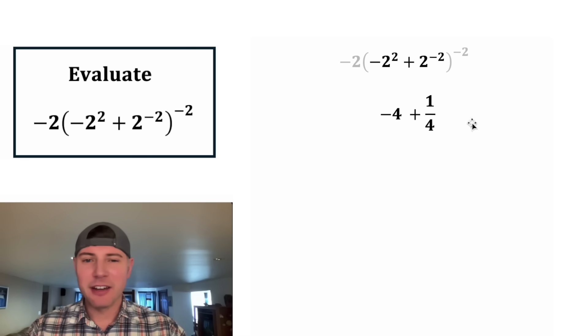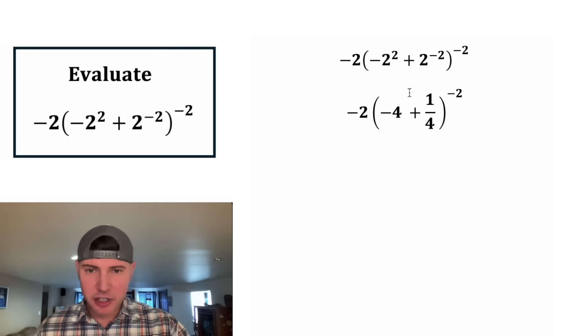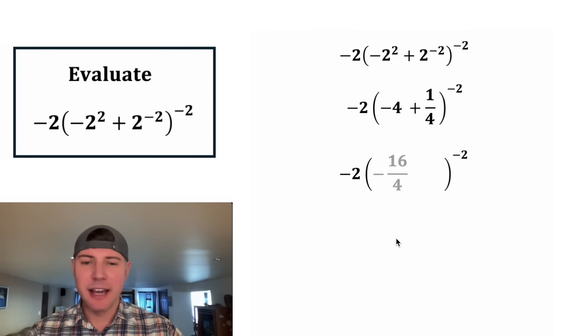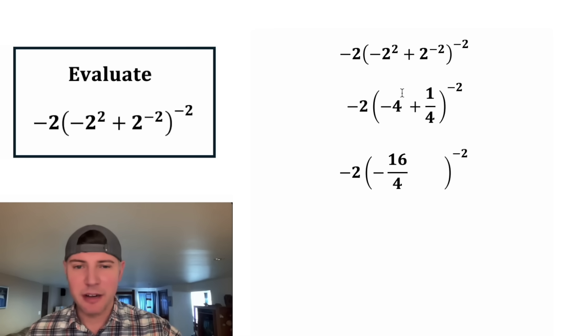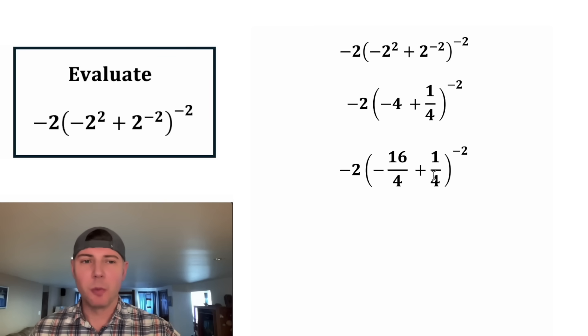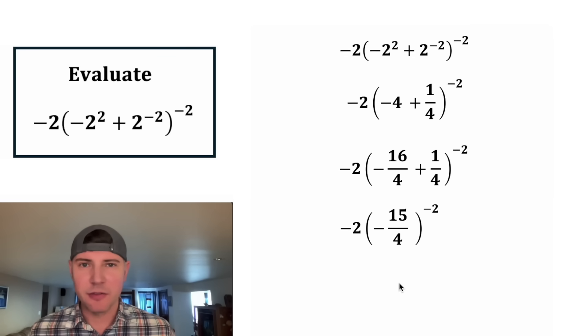And now we've simplified every term inside the parentheses. Let's smush them together and copy down everything else. In order to combine these two terms in the parentheses, we have to give them a common denominator. We can rewrite this negative four as negative 16 fourths. That way it'll have a common denominator with the one fourth. Negative 16 fourths plus one fourth is negative 15 fourths.